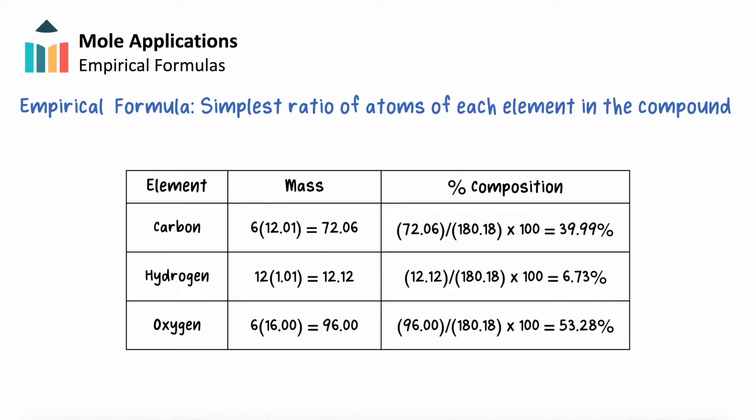We take the moles of atoms of each element times their molar mass and divide that by the total mass of the compound to find the mass percent composition of that element in the compound.